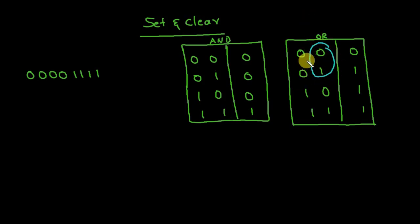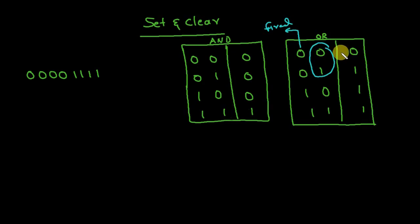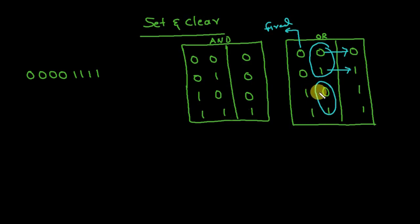No matter what number you are ORing with zero, the result is always the number itself — that's the first observation. The second observation is that no matter what the number, if we OR with one, the result is always one.